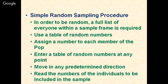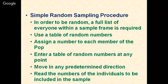For simple random sampling procedure, a full list of everyone within the sample frame is required. Assign a number to each member of the population, then enter a table of random numbers at any point and move in any predetermined direction — horizontal, vertical, or diagonal. Read the numbers of individuals to be included in the sample and continue selecting until the required sample size is attained. For example, to select 30 students from 900, assign codes 001 to 900, pick a starting column and row from the random table, and move in a chosen direction.